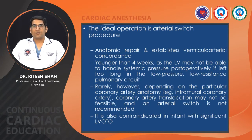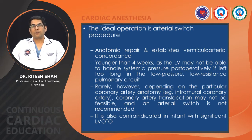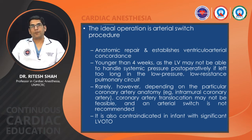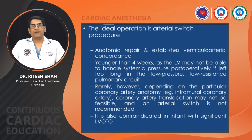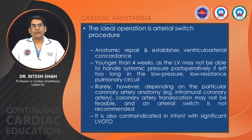The ideal operation is the arterial switch operation (ASO), which is an anatomic repair and establishes ventricular-arterial concordance. It is usually done in patients younger than four weeks of age. Two-stage switch is done where the patient undergoes PA banding with or without a shunt or PDA stenting, and then later, after the LV is prepared, the switch is performed — as the LV may not be able to handle systemic pressure if left too long in the low-pressure, low-resistance pulmonary circuit. Arterial switch is also contraindicated in infants with significant left ventricular outflow tract obstruction, and it is rarely not feasible depending on coronary anatomy.